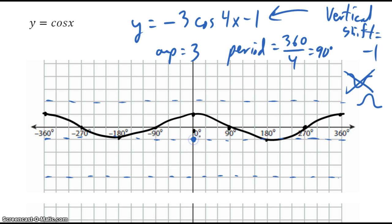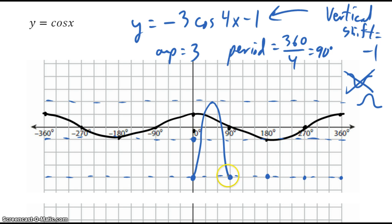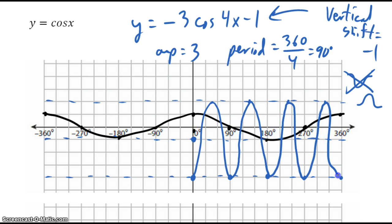Because of the negative, it starts at the bottom and ends at the bottom, going all the way up in between. It repeats every 90 degrees, so it does it four times in 360 degrees. The same pattern continues on both sides of the origin.